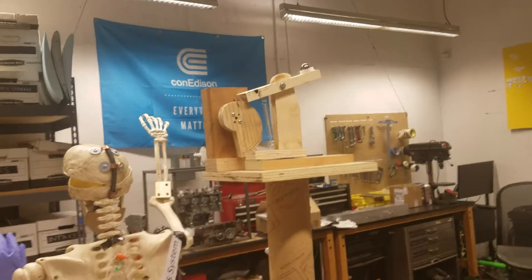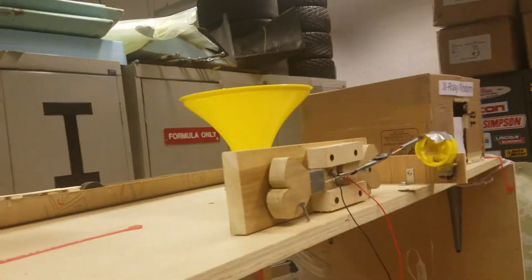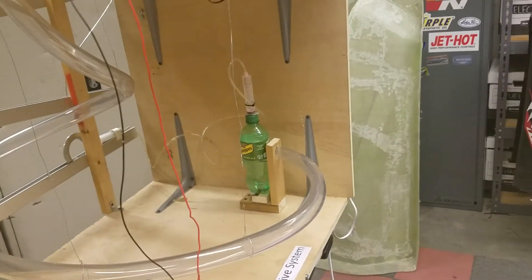Once the catapult is activated it will propel this ball into this funnel, and once it goes into the funnel it will go down through this tube and hit this water bottle.